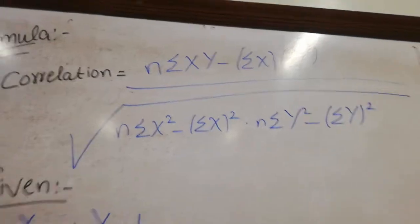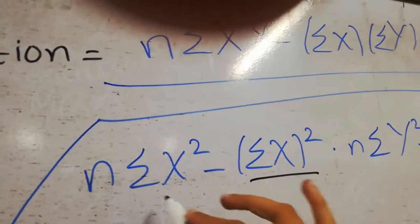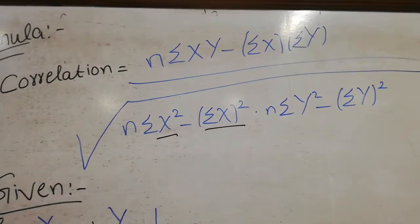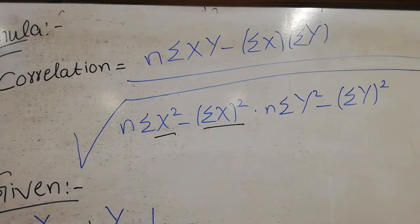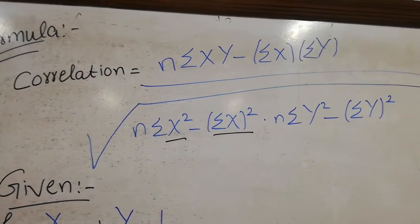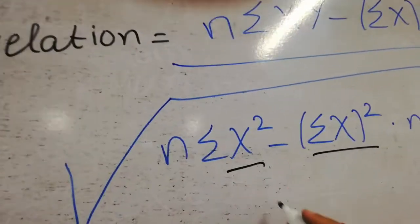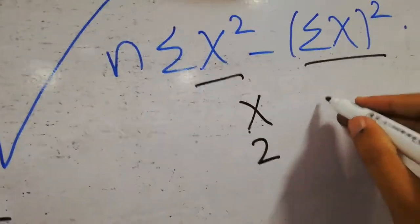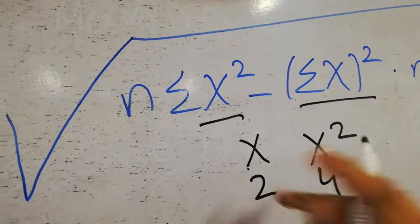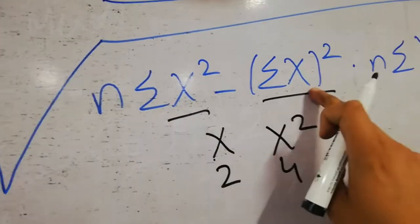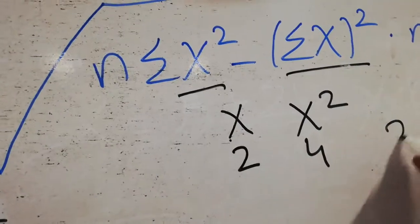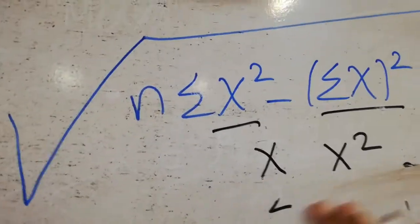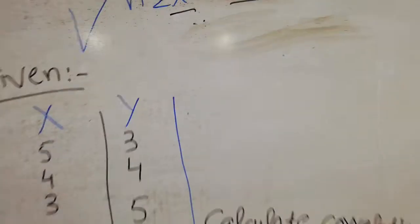Students are often confused when doing papers in B.Com or M.Com at Punjab University about the difference between summation of X-squared and the square of summation X. X-squared means if X is 2, then X-squared is 4. But the square of summation X means the square of the total sum. We'll solve a small question so the idea becomes clearer.